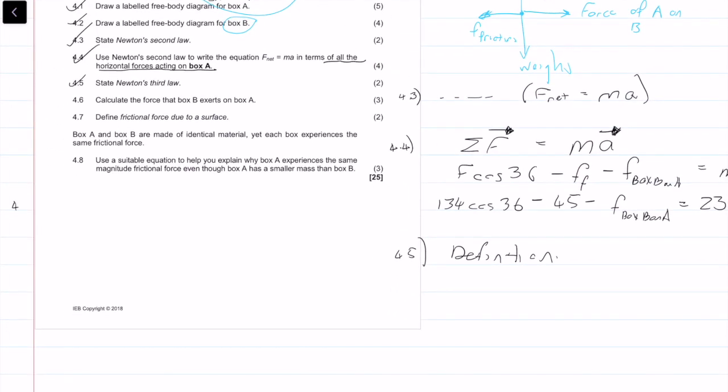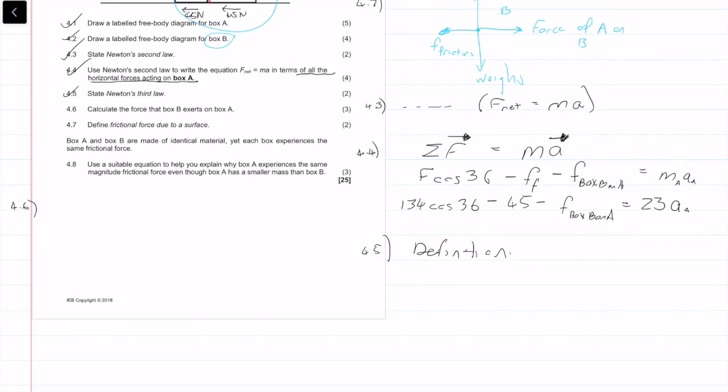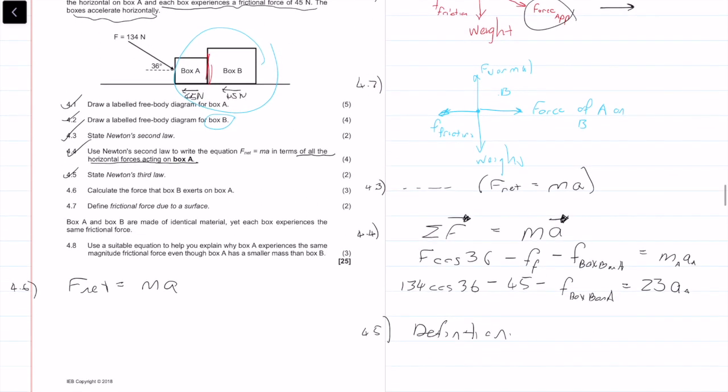Question 4.6: Calculate the force that box B exerts on box A. How are we going to do this? Let's start off with what we have. We already have an equation. We know that F_net is equal to ma. If we look at the system now, the concern is of the system. Let me draw a free body diagram of the system. The system looks something like this. We have force friction total. We don't really care about weight. We have weight there, and we have force normal. Then we have this force here, which is the force applied, at an angle of 36 degrees.